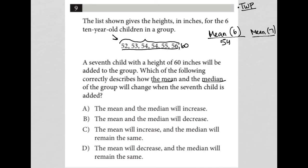I'm getting 384, but I divide that by seven because there are seven children now and I get a mean of 54.85.